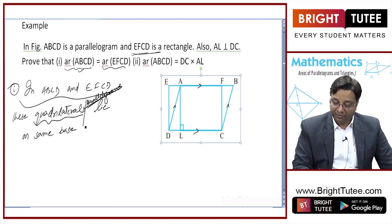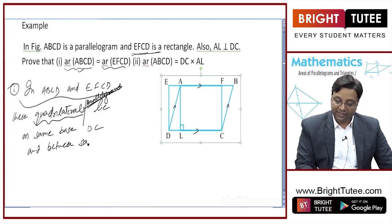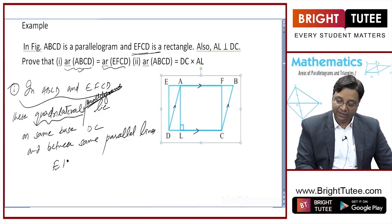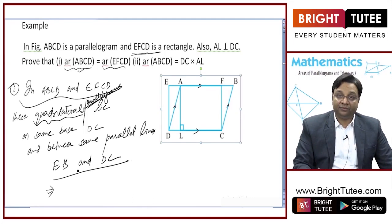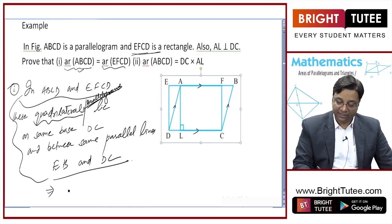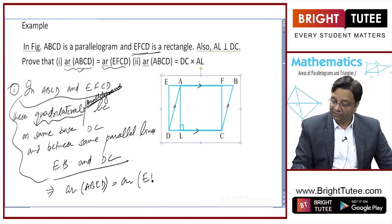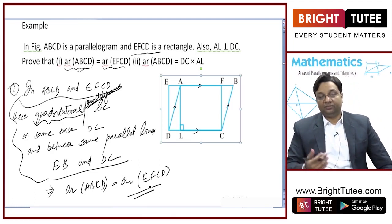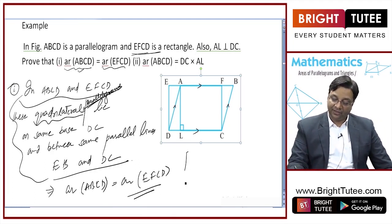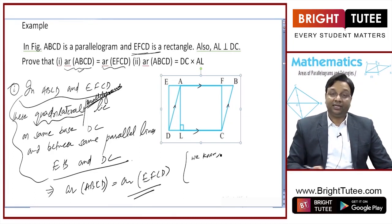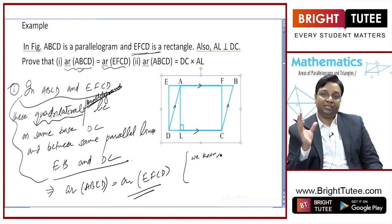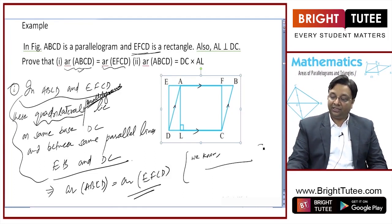These parallelograms lie on the same base DC and between the same parallel lines EB and DC. Hence, it is enough to say that area of ABCD will be equal to area of EFCD, as per the theorem we have just proved. We know that areas of parallelograms on the same base and between the same parallel lines are equal, so you can mention that theorem here.